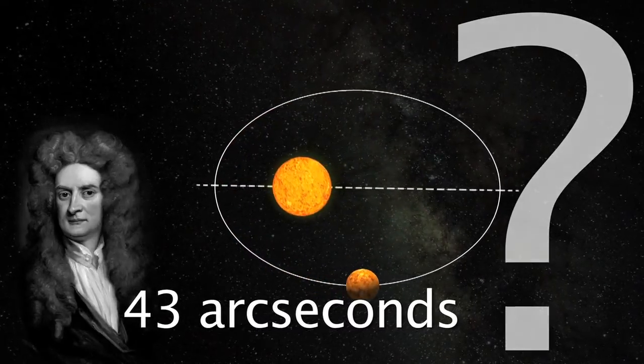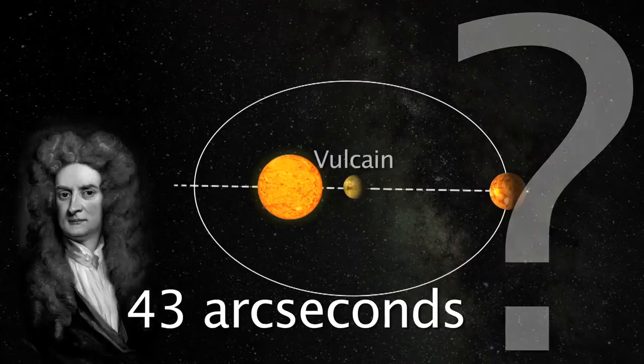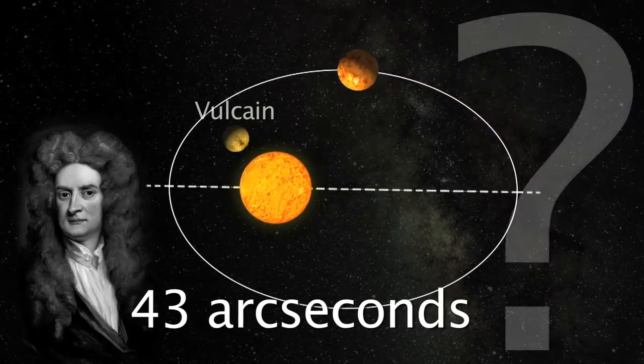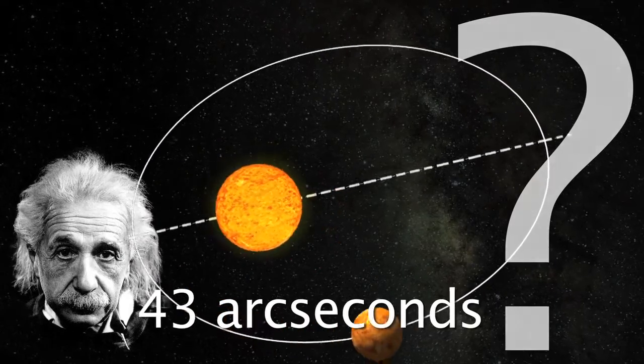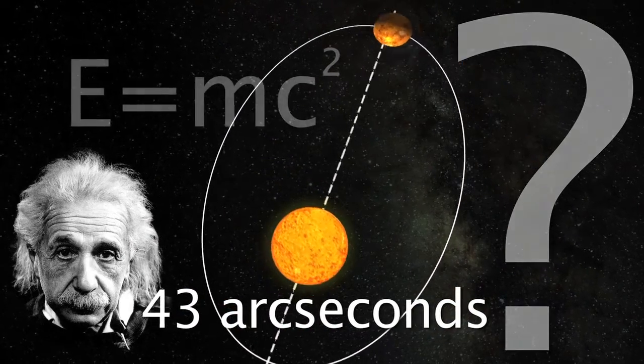the astronomers of that time even tried imagining the existence of a planet between Mercury and the Sun. In fact, Albert Einstein calculated the correction that the general relativity brings to Newton's theory,